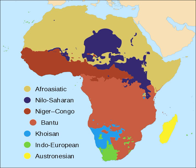The total number of languages natively spoken in Africa is variously estimated, depending on the delineation of language versus dialect, at between 1,250 and 2,100, and by some counts at over 3,000. Nigeria alone has over 500 languages according to SIL Ethnologue, one of the greatest concentrations of linguistic diversity in the world.